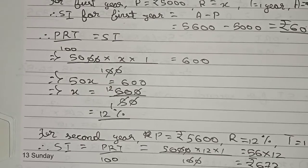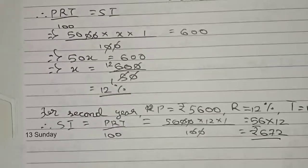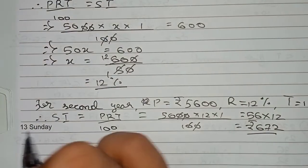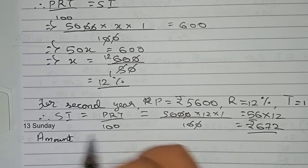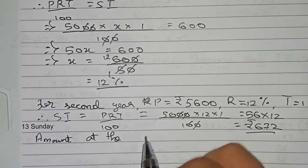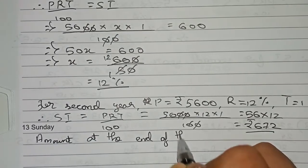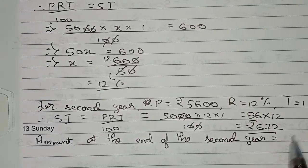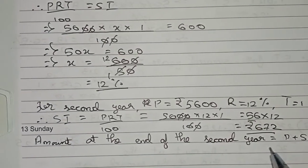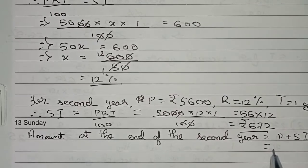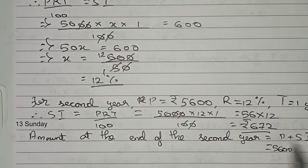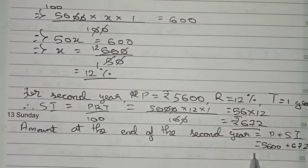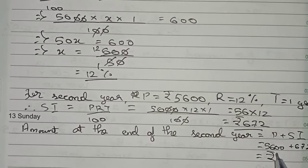To find the amount at the end of the third year, we first need the amount at the end of the second year. Amount equals principal plus SI, so that is 5600 plus 672, which equals rupees 6272.